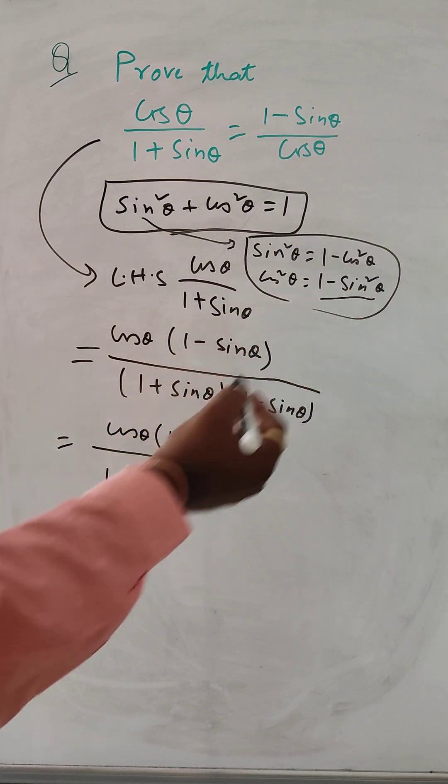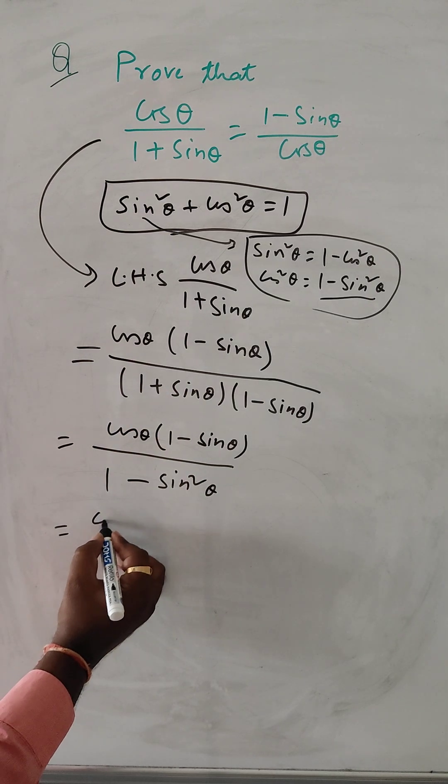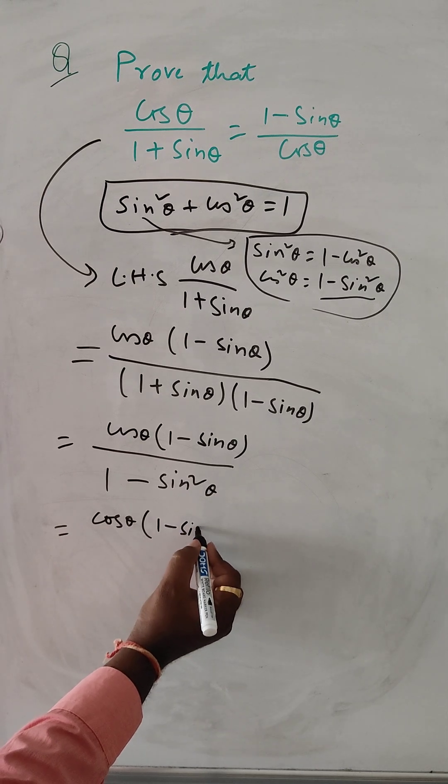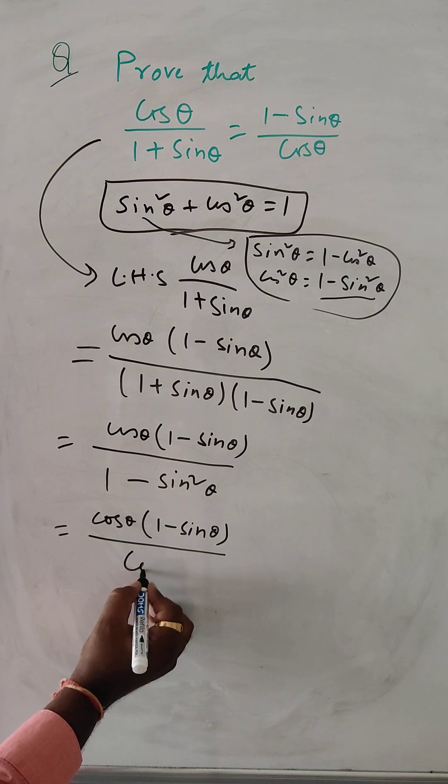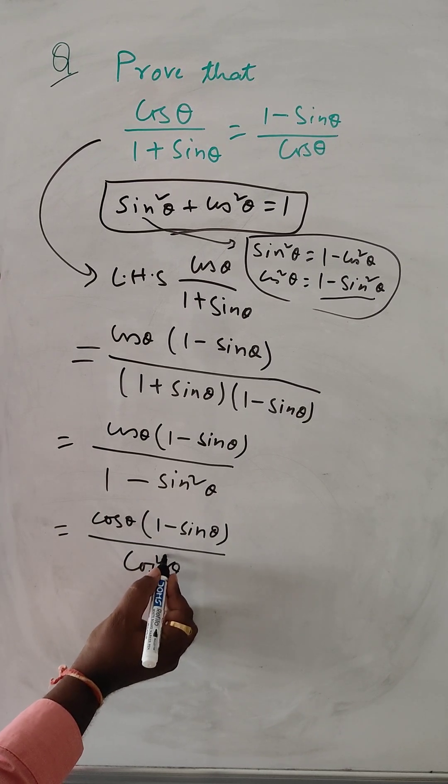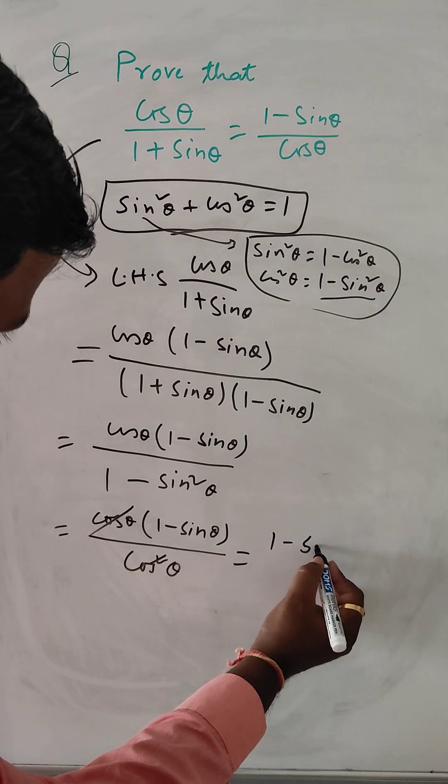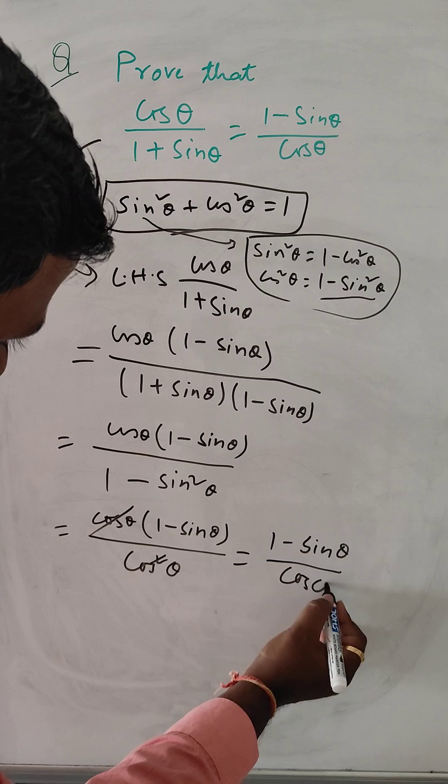So here 1 minus sin square theta, we can put cos square theta. So cos theta 1 minus sin theta and here cos square theta. This one get cancelled, 1 minus sin theta divided by cos theta.